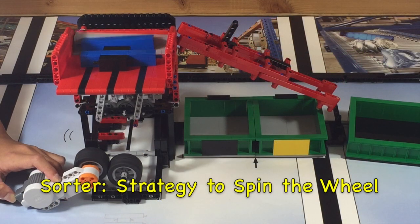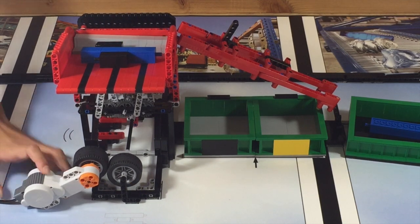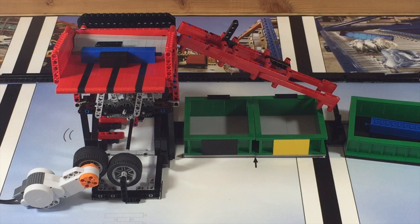To spin the wheel on the mission model, you should spin that wheel with another wheel attached to the motor so it acts like a gear. The motor will have to spin the wheel clockwise so the wheel attached to the Sorter will spin counter-clockwise.